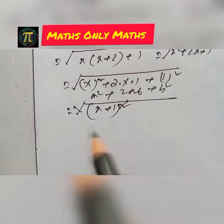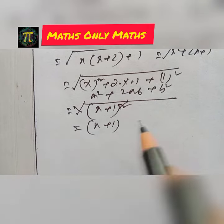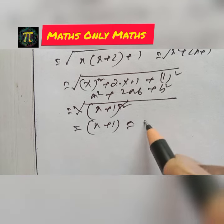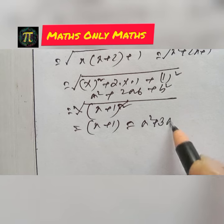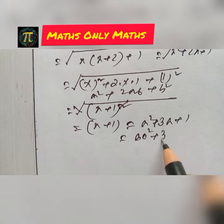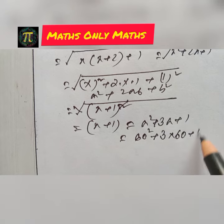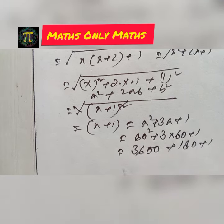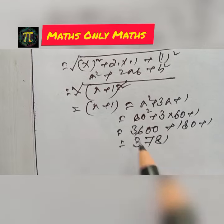The square root and square cancel, giving x+1. Substituting back, x+1 = a²+3a+1. Since a = 60: 60²+ 3×60 + 1 = 3600 + 180 + 1 = 3781. The answer is 3781.